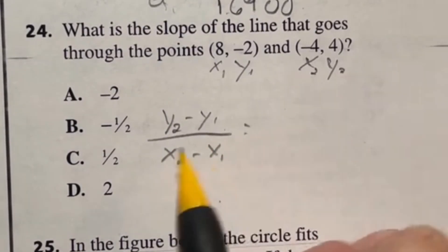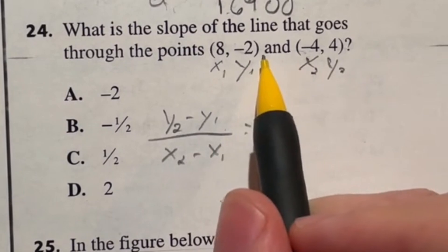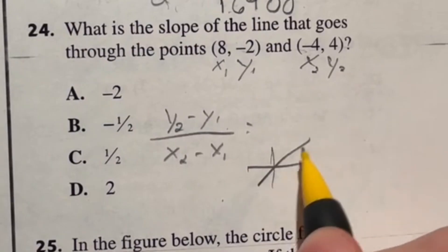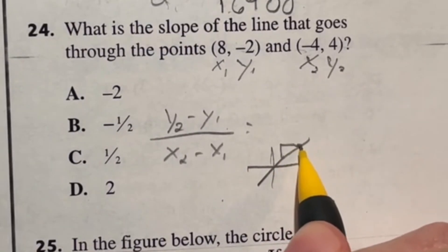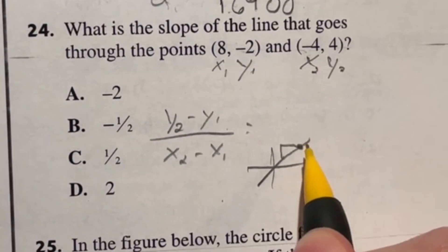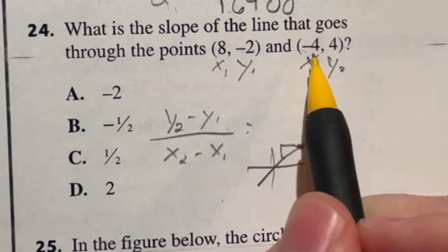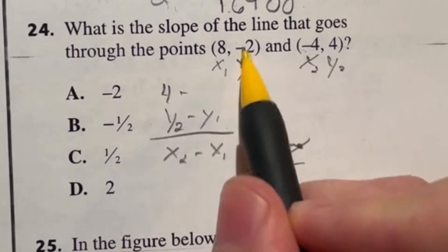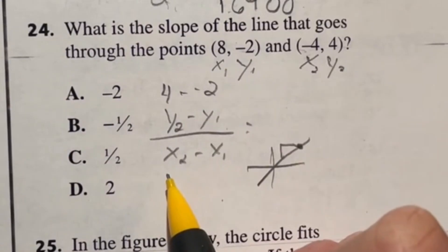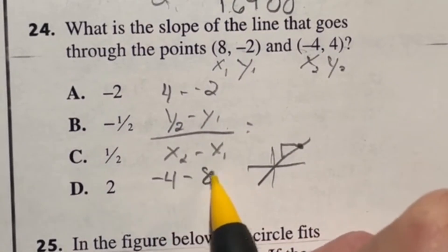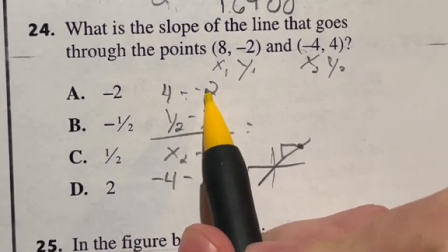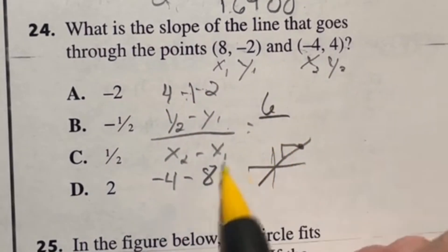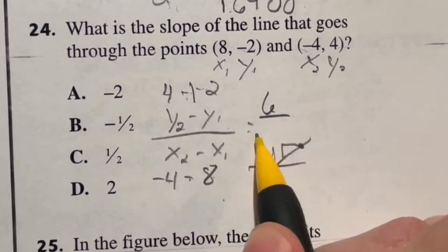But remember, slope is just rise over run. Like if you have a graph with a line, it's how far you go up and over to get back to your line. All right. So really, you could kind of visualize this work through a bunch of different ways. Let's go ahead and try this one out. If we're looking at this, y2 was four minus negative two. And on the bottom, we have negative four minus eight. Meaning here, let's see, four minus negative two. Well, if you have a negative and negative, that makes it a plus. So four plus two gives me six. And on the bottom, negative four minus eight would give me negative 12.